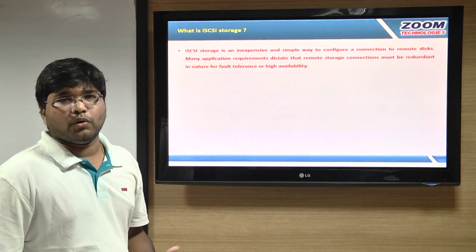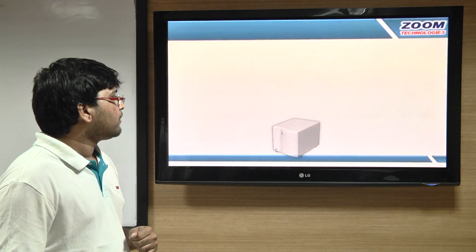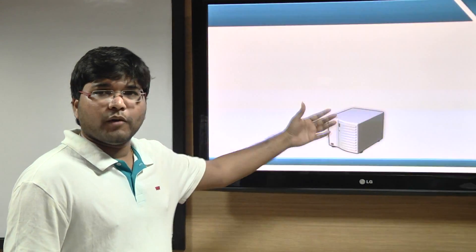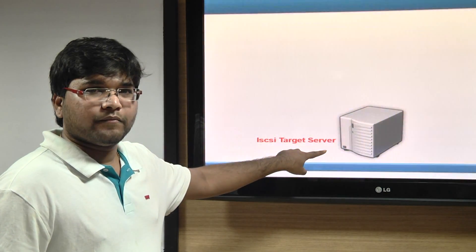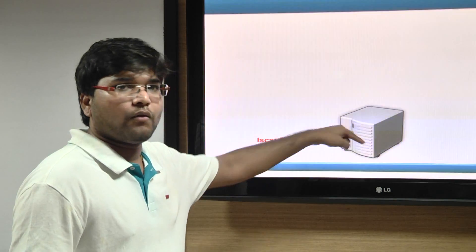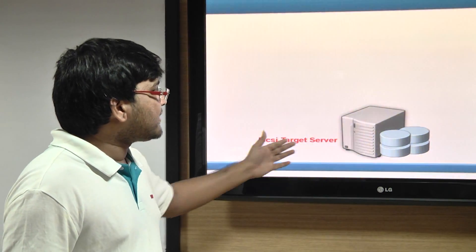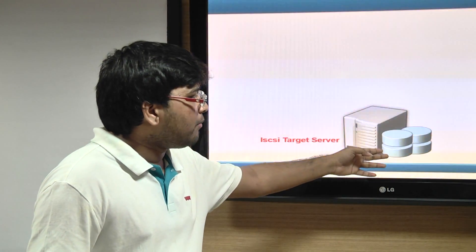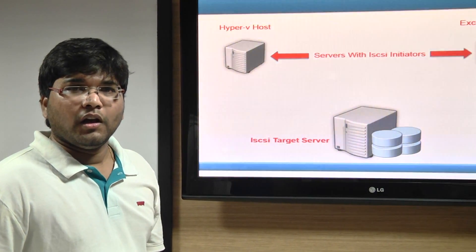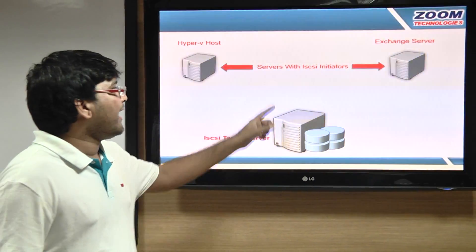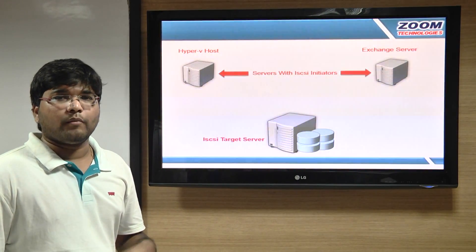Let's see how iSCSI works. We have a storage device here — a normal 2012 Server OS which has some bunch of hard disks. It is called an iSCSI target server, and that is the service which we install in your 2012 Server operating system. Once we install this iSCSI target service, we can serve storage to remote servers like your Hyper-V server or XEN server. In these two servers, we will have a service called iSCSI initiators. By default, these initiators are available in Windows 8 or 2012 Server OS.